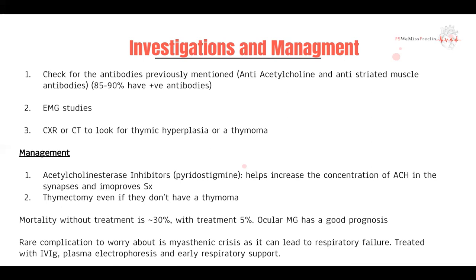One of the rare complications to worry about is a myasthenic crisis, which is essentially the basic fundamentals of the disease but to a much higher level — even more weakness and even more inability to contract. One of the muscles that's always contracting is the diaphragm, so the key complication we worry about in myasthenic crisis is respiratory failure. We treat that with IVIGs, plasma electrophoresis to help filter out those antibodies, and early respiratory support — including close monitoring, early intubation, and tracheostomies if nothing else helps.